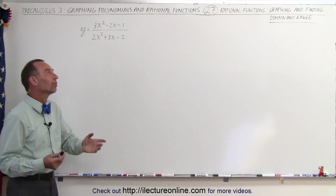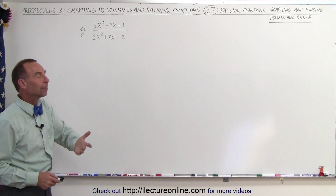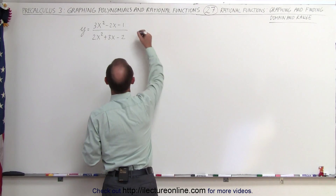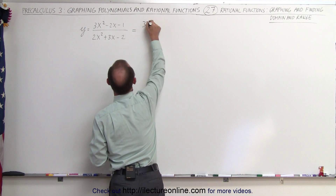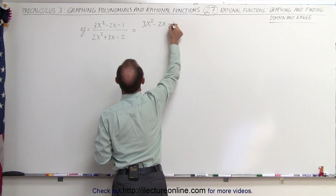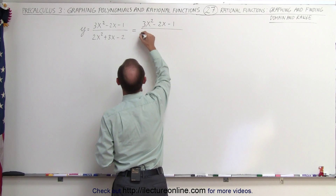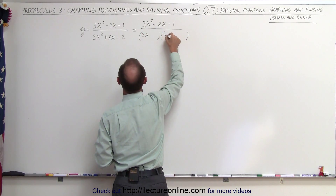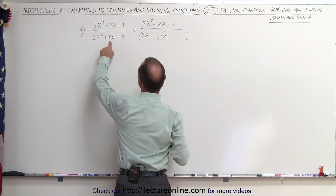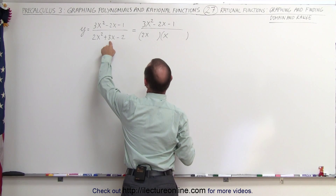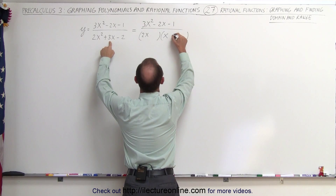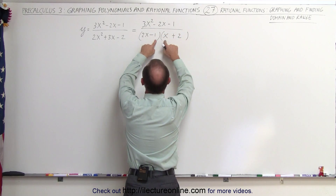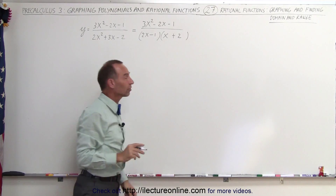The first step always is to look at the denominator and determine what x cannot be. So let's try to factor the denominator. This can be written as 3x squared minus 2x minus 1 divided by — factoring the denominator gives us (2x minus 1)(x plus 2). We need a plus 3x there, so how about plus 2 and minus 1? That would be 4x minus x is 3x, and that would be minus 2. Yes, that works.